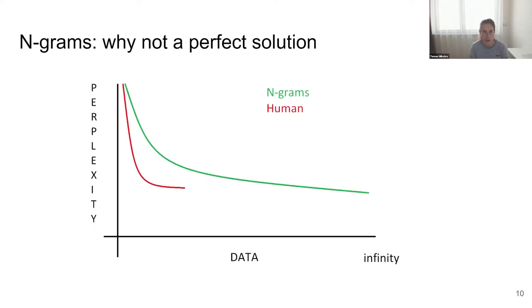Claude Shannon was doing experiments in the 1950s trying to estimate the entropy of English, and it became clear that n-grams don't learn from data as quickly as humans do. Google published a five-gram model trained on an insanely large dataset, and it was still much worse in perplexity than what a human would assign to English text. Neural networks are somewhere between n-grams and humans — they learn faster than n-grams but slower than humans.